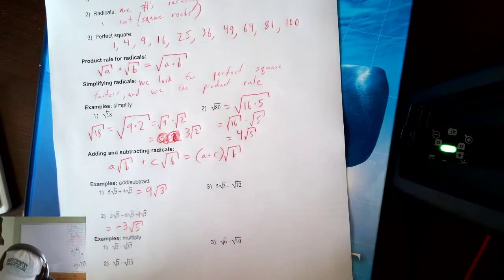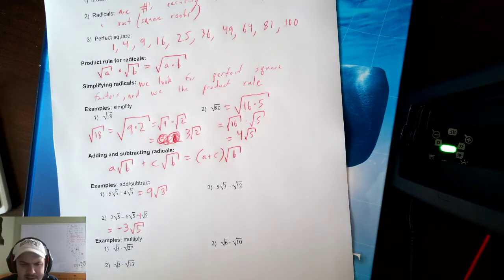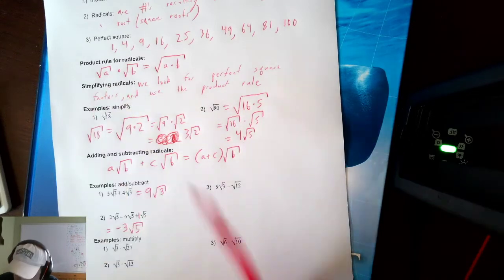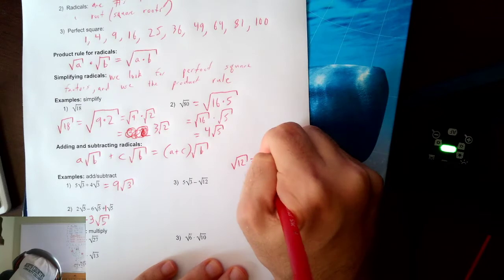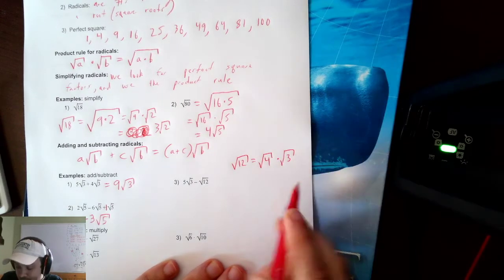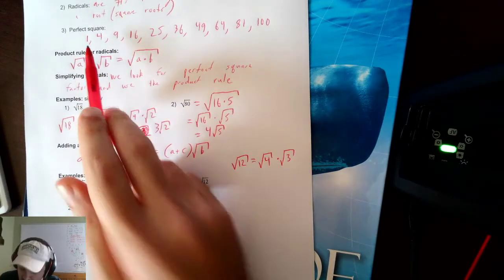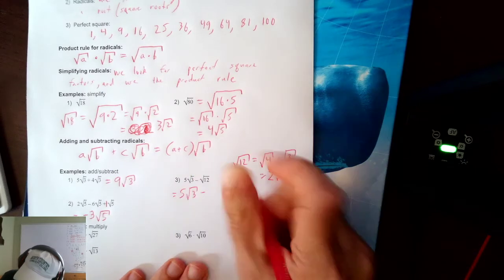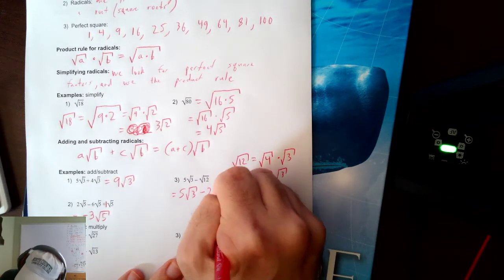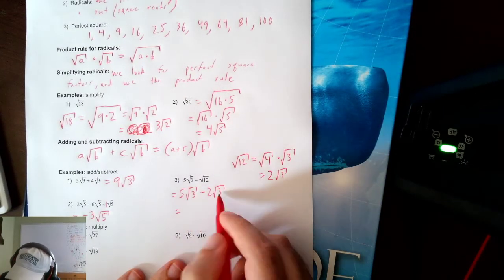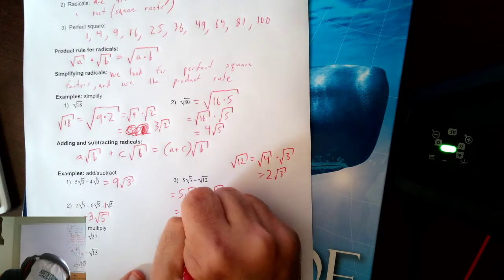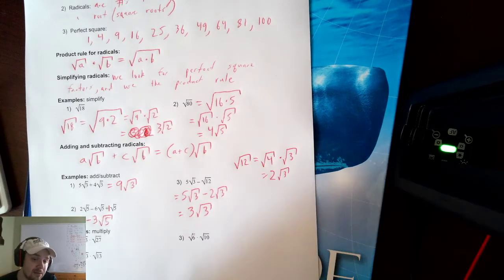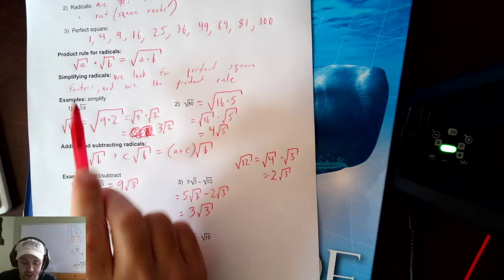Another example: 2 minus 6 plus 1 (noting that when there's no number in front it's always 1) gives negative 3 square root of 5. Now look at 4 square root of 3 minus square root of 12. Those don't have the same thing under the square root, so I can't combine them directly. However, square root of 12 simplifies: square root of 12 = square root of 4 times square root of 3 = 2 square root of 3. Rewriting: 5 square root of 3 minus 2 square root of 3 = 3 square root of 3. Always check if you can simplify radicals before combining.